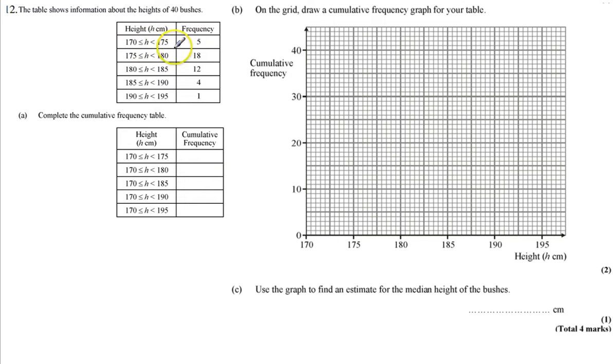So first of all, there's 5 bushes between 170 and 175, we know that. And then between 170 and 180 is going to be a total of these, which is 5 and 18, which is 23.